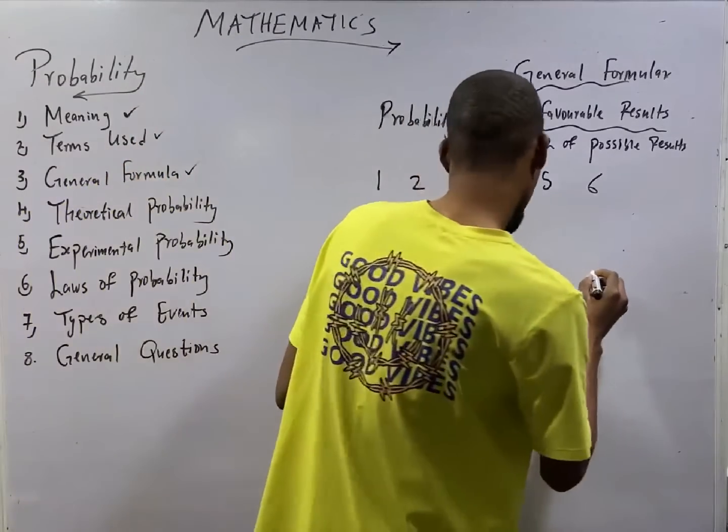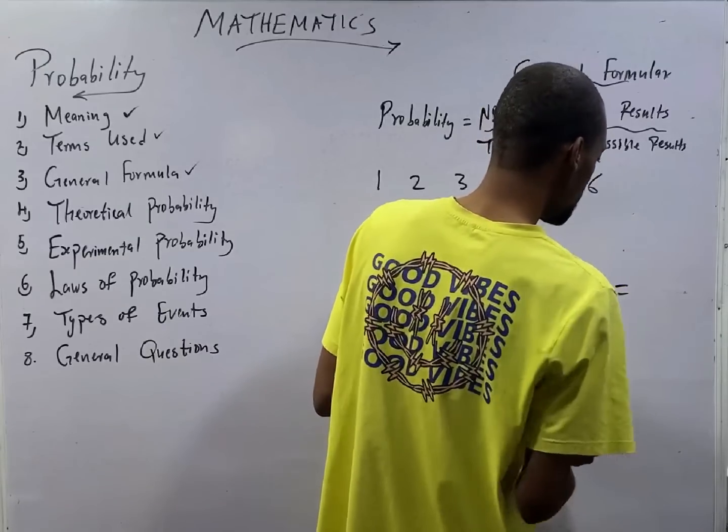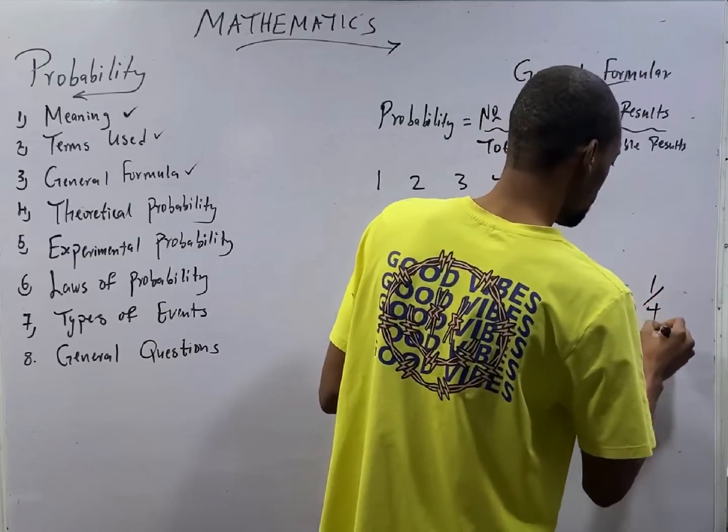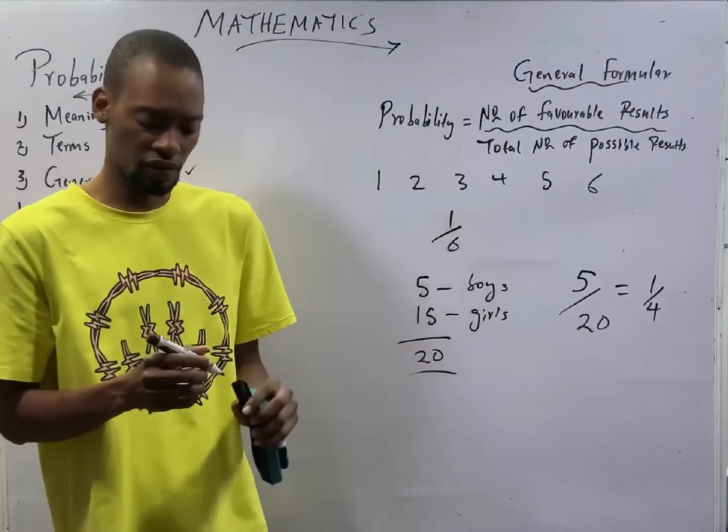So, this is 5 over 20. And that is, when you break it down, you should get 1 over 4. If 20 over 5 is 4.